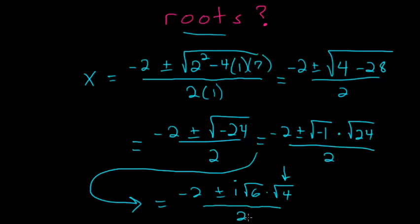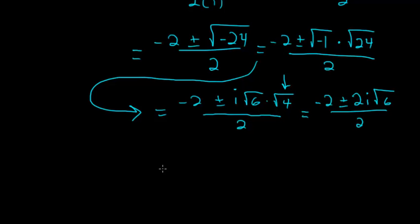This is all divided by 2 and so we have minus 2 plus or minus here the square root of 4 is 2 so we have 2i times the square root of 6 all divided by 2.